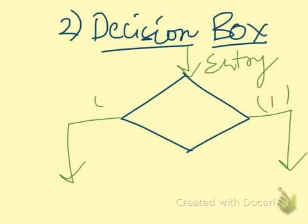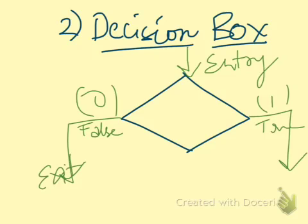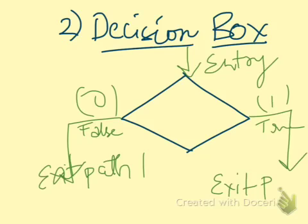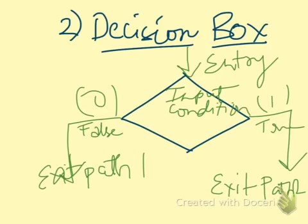Say, 1 and 0, where 1 indicates true and 0 indicates false. There are two parts here: this is exit part 1 and that is exit part 2. So this is how a decision box works. The input comes in and then the input condition. This is the input condition.